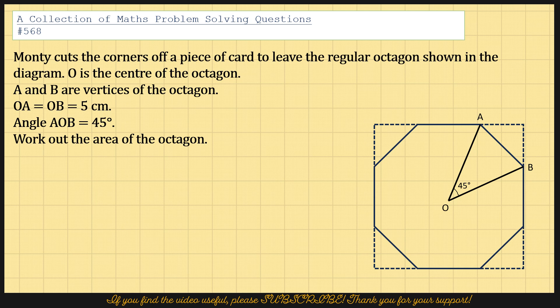Work out the area of the octagon. So here what we have been given is an isosceles triangle OAB. And we need to find the area of the isosceles triangle OAB and then simply multiply it by 8.